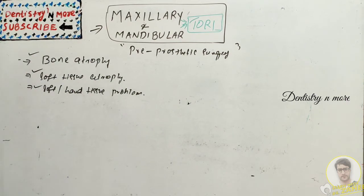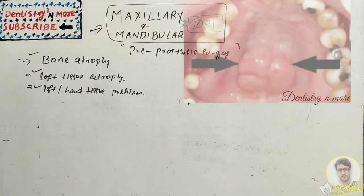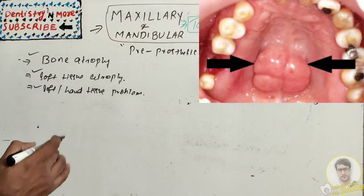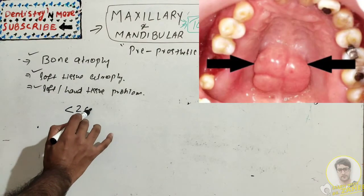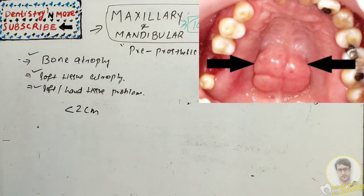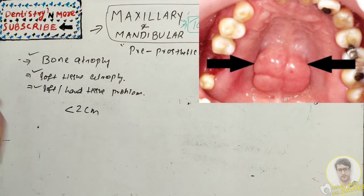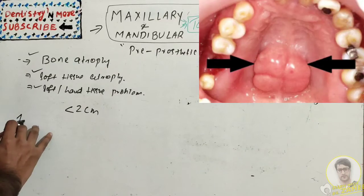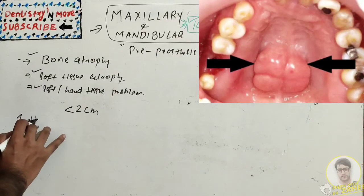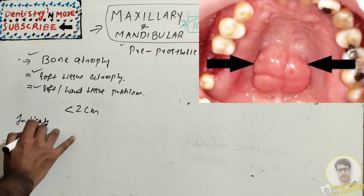Maxillary tori, or palatal tori, are usually present on the midline of the hard palate. Most palatal tori are less than two centimeters in diameter, but the size can change throughout life. So when do we need to remove a maxillary tori? That is the indication for removal of maxillary tori.